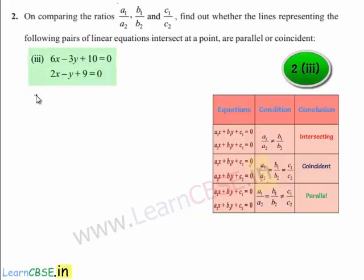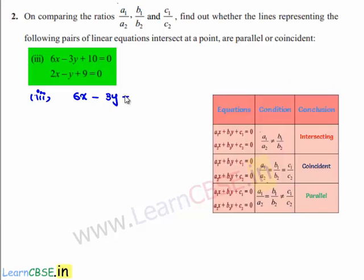Now coming to the third bit, the given set of linear equations are 6x minus 3y plus 10 is equal to 0, and 2x minus y plus 9 is equal to 0.